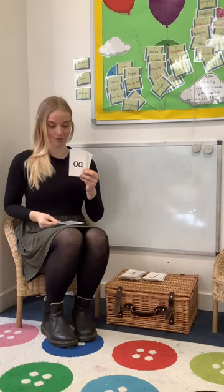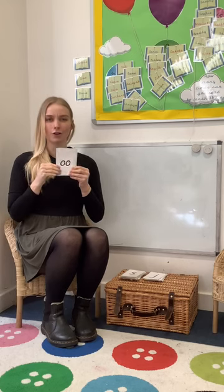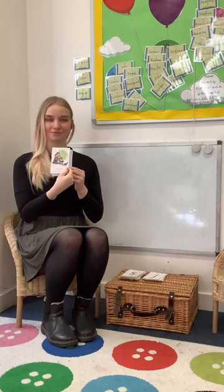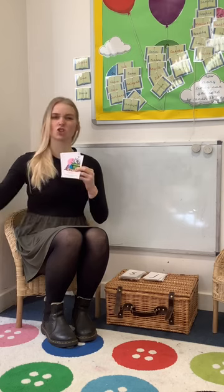This one is a trigraph because it has three letters that make one sound. OA — goat in a boat. OO — poo at the zoo. OO — look at a book. AR — start the car. OR — shut the door. UR — nurse with a purse. OW — brown cow. OI — spoil the boy.